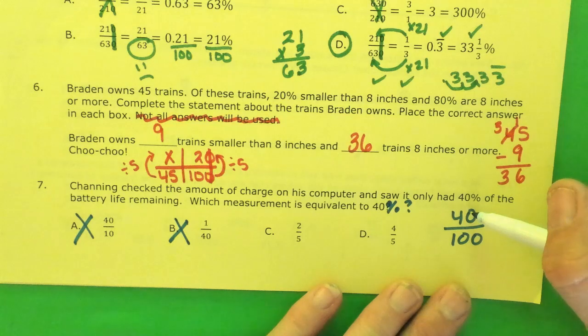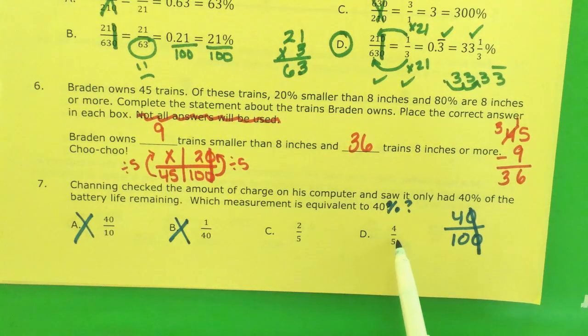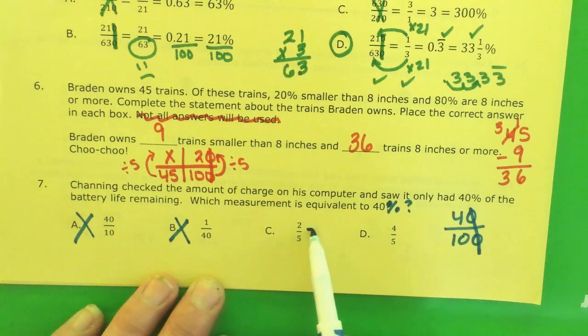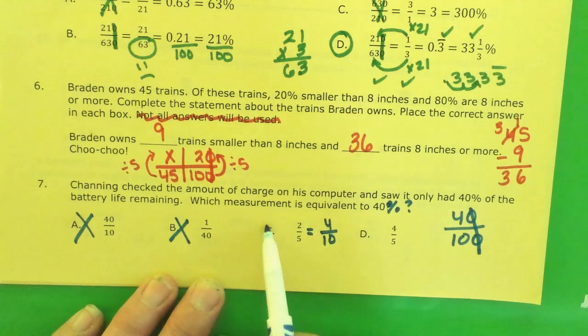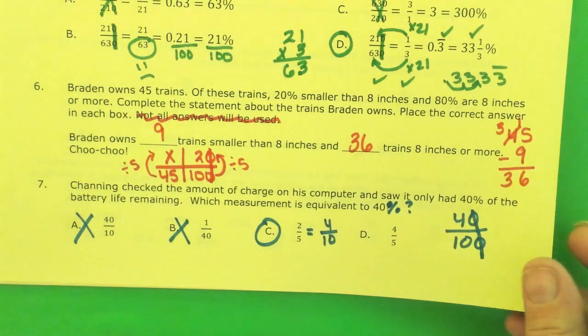If I reduce 40 and 100, I get 4 tenths. Is that the same as 4 fifths? Or is that the same as 2 fifths? It's the same as 2 fifths, because if I double it, I get 4 tenths. C for Channing and checking his charge on his computer.